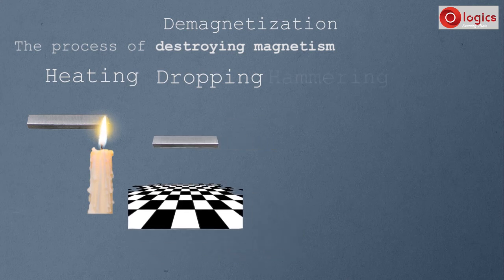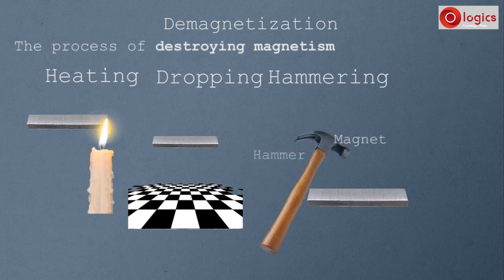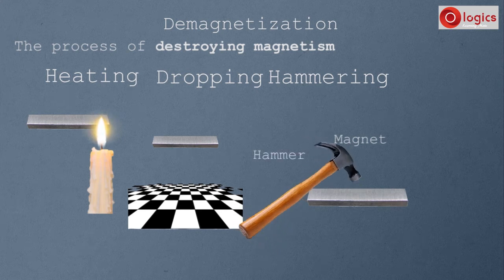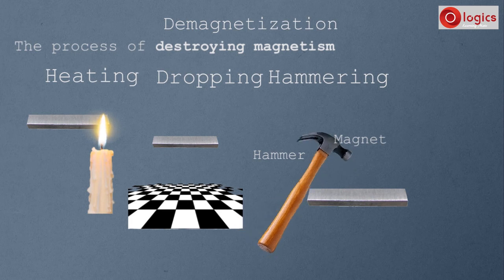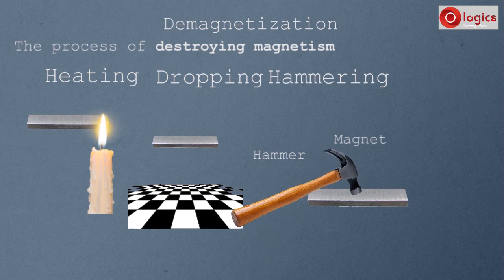Third process is hammering. This is a magnet and this is a hammer. Hit this magnet with this hammer for many times. Observe — the magnet loses its magnetism after several hits and becomes a steel bar.